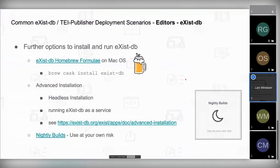There are some other installation options. For Mac users, there's a Homebrew formula — thanks to Joe — where you can simply run: brew cask install eXist-DB, which installs the latest eXist-DB version. There are also many other installation modes, like headless installation or installing eXist-DB as a service, listed at the link on the slide. Thanks to Adam Retter, we also have nightly builds from the eXist-DB development branch.